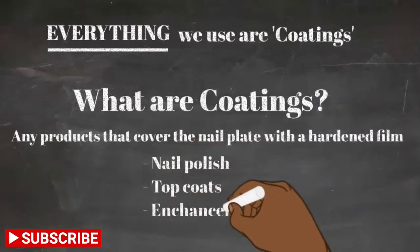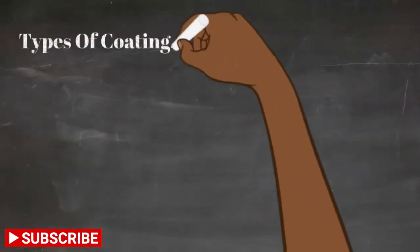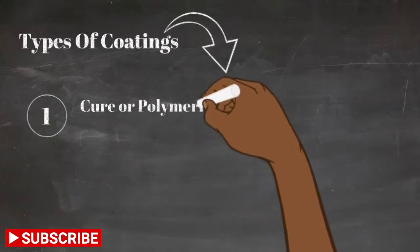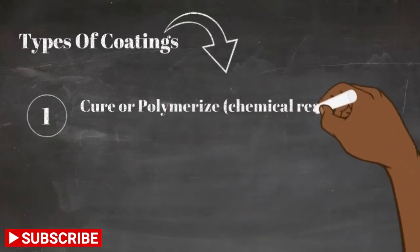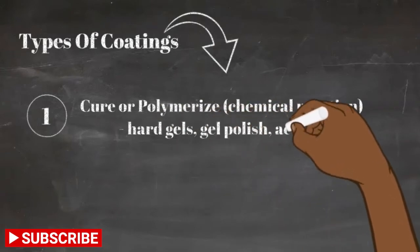There are two different types of coatings. The first one would be ones that cure or polymerize. This is done with a chemical reaction. An example would be hard gels, gel polish, and acrylic.